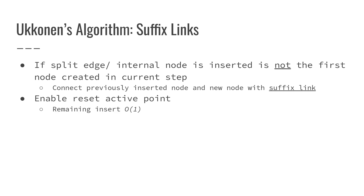Suffix links occur when we're splitting an edge and inserting an internal node, and we do this on an occasion that is not the first occasion. If it's the first time we've done a split in this round, we will not employ a suffix link; if it's not the first time, we will use suffix links. The purpose of suffix links is to connect previously inserted nodes and the new node together. The beauty of suffix links is that they enable us to reset our active point and the remaining inserts will be constant time, which is very important for the linear runtime we're looking for in constructing our suffix tree.